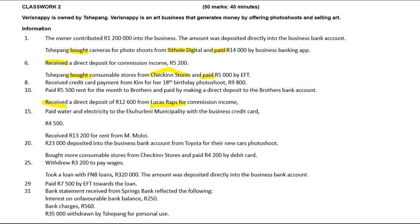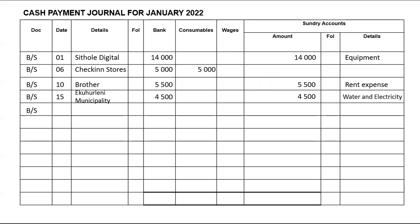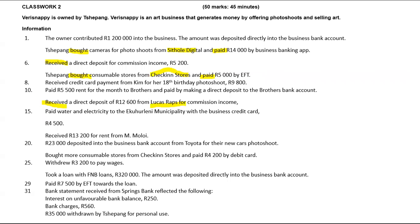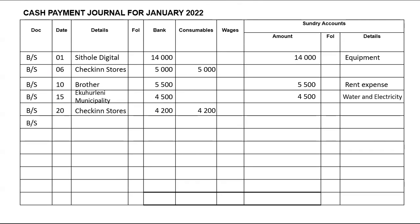We bought more consumables from Check-in Stores and paid 4,200 by debit — that is a payment, so it goes to the cash payments journal. We'll have BS; it was paid to Check-in Stores, bank and consumables. On the 25th, we withdrew 3,200 to pay for wages — that goes to the cash payments journal. We'll have BS, the 25th, cash — under bank as well as wages, which is 3,200.